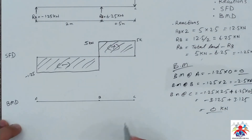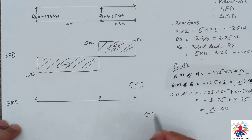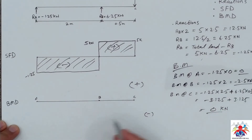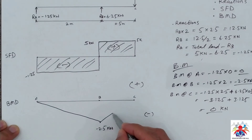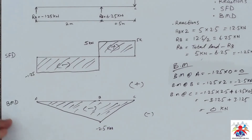Since all values are in the negative zone, we draw the bending moment diagram in the negative region. At point A it is zero, at point B it is minus 2.5 (somewhere here roughly), and at point C it is zero again. We connect these points to get our final drawing. This is our bending moment diagram in the negative zone. That's how you draw shear force and bending moment diagrams for an overhanging beam with one point load acting downwards. Thank you for watching — please don't forget to subscribe!